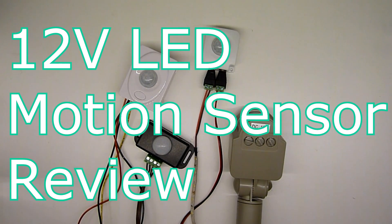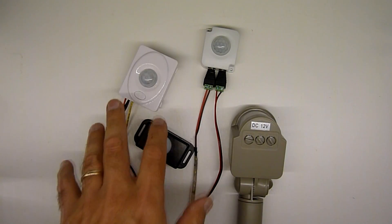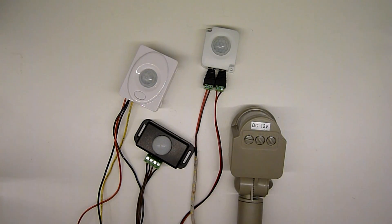Today we're going to review 12-volt PIR motion sensors. We're going to cover the features, advantages, and disadvantages of each. One's an outdoor one, and the other three are all indoor. Let's get started.